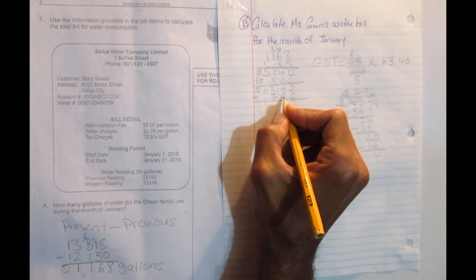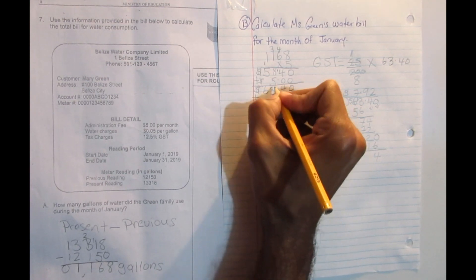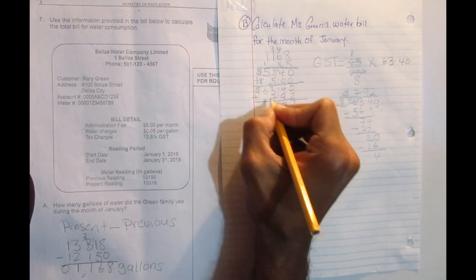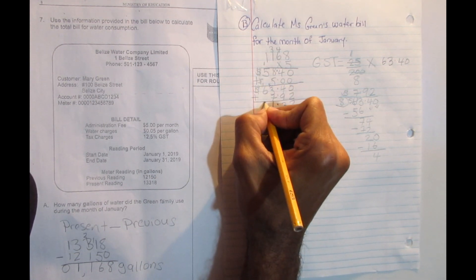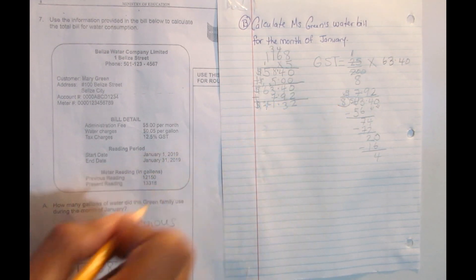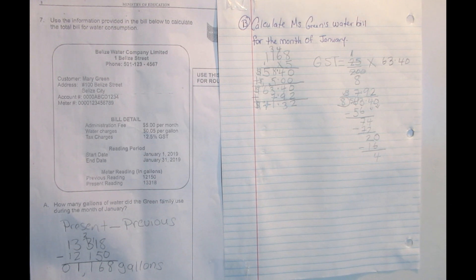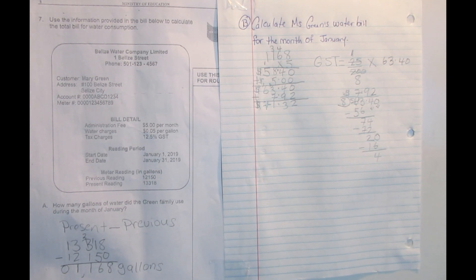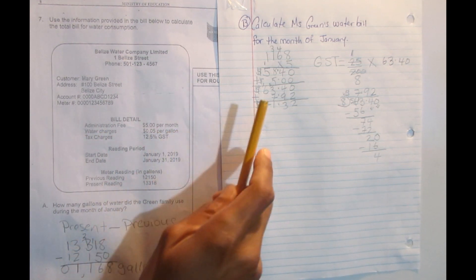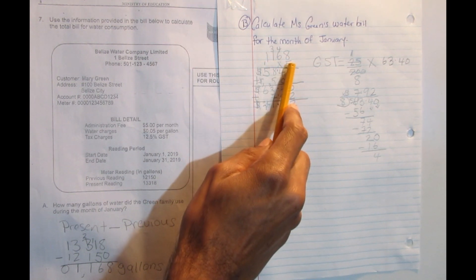Adding $7.92 to $63.40: 0 plus 2 is 2, 9 plus 4 is 13, bring down the 3 carry 1, 7 plus 3 is 10 plus 1 is 11, respect the decimal, bring down 1 carry 1, 6 plus 1 is 7. The total bill is $71.32 and the bill is solved. The first step was to subtract present from previous reading — we got 1,168 gallons.